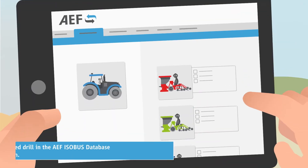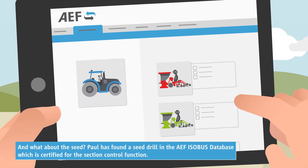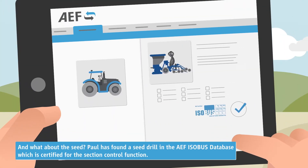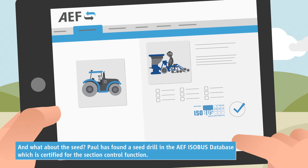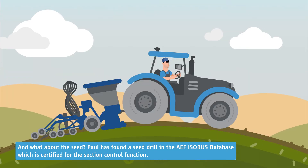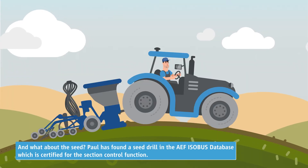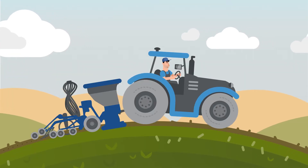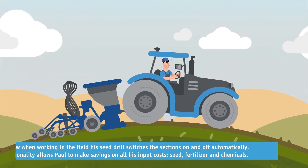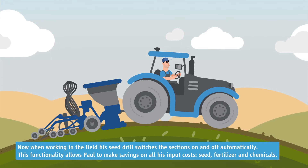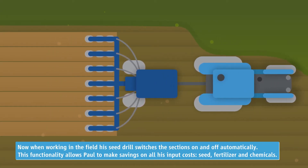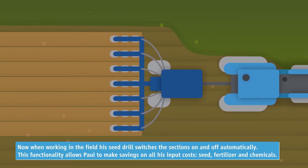And what about the seed? Paul has found a seed drill in the AEF ISOBUS database, which is certified for the section control function. Now when working in the field, his seed drill switches the sections on and off automatically.